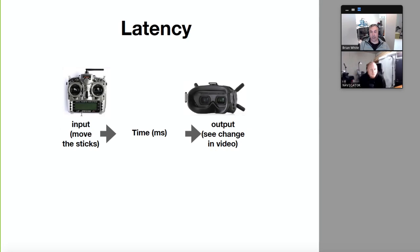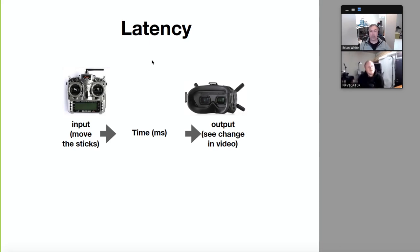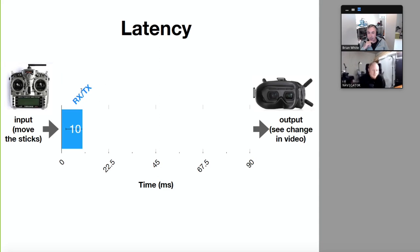I always think it's best to think of latency starting from the stick to what you see. You move the stick, a bunch of things happen, and then at some point you see a change. Some people call this end-to-end latency. That's the critical latency behind the experience when you're flying — you're cruising along, the horizon is level, then you roll right and the horizon tips left. The receiver and transmitter play a role in the first part of this latency.